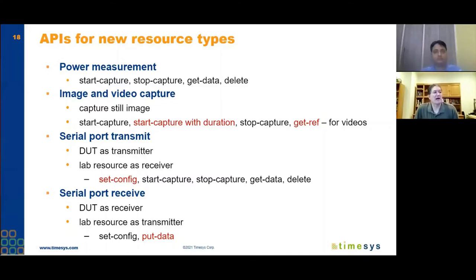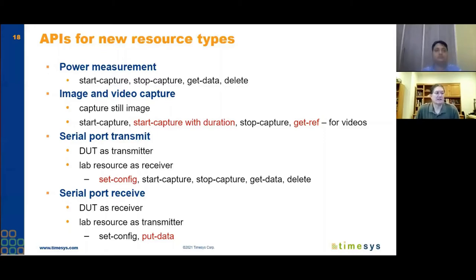For serial port, we added a few things. When dealing with buses you need configuration, so we added a set_config API for configuring things like baud rate or transmitter/receive mode. For serial port receive, where the device under test is the receiver and the lab resource is the transmitter, all the other APIs deal with capture, but this is the write operation — essentially put_data.